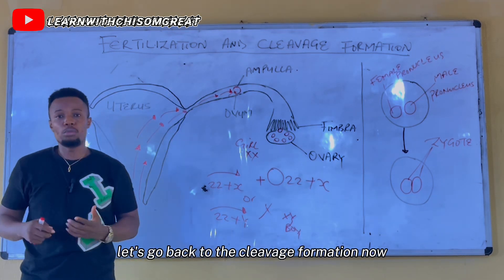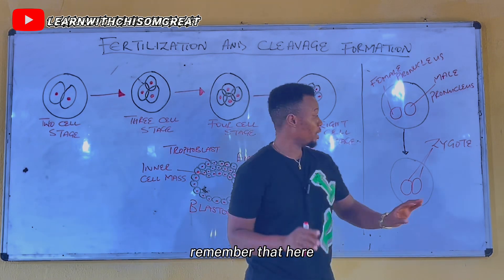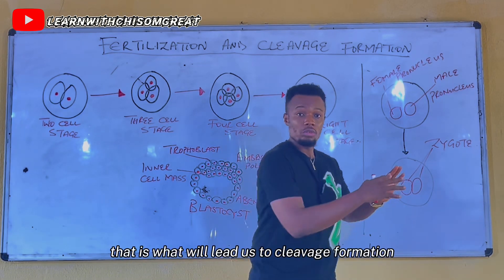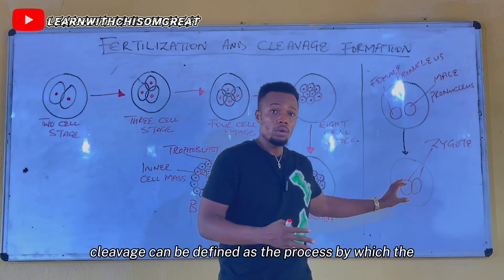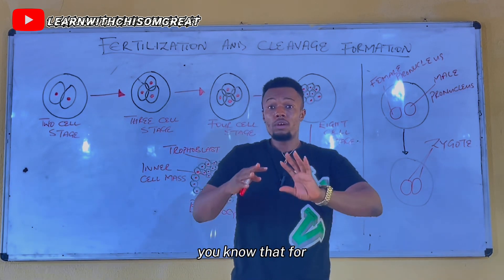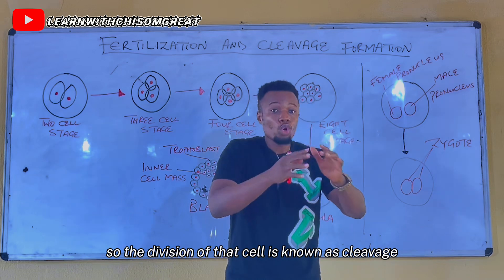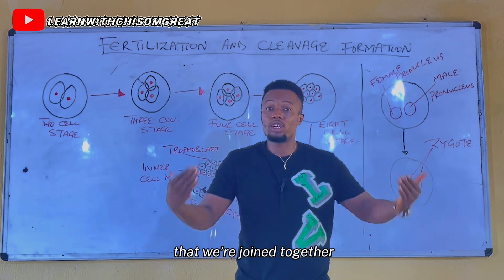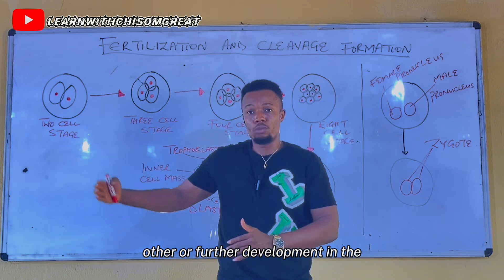Now let's go over to cleavage formation. The male and female pronuclei joined together to form a zygote, and that leads to cleavage. Cleavage can be defined as the process by which the two-cell stage — that is the male and female pronuclei — divides. For any growth to happen in the body, cells must divide, and that division is known as cleavage.